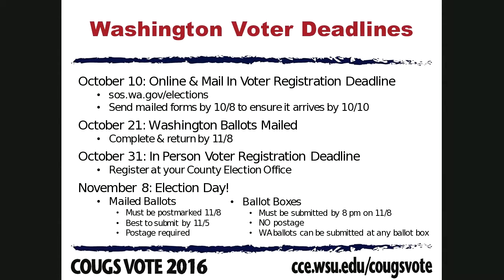Make sure you put postage on your ballot. Depending on where you live, you might have access to a ballot box — there's one on the WSU campus right outside the union building. You don't need to put postage on your ballot if you use a ballot box, and it needs to be submitted by 8 p.m. on election day. Any ballot can be submitted to any ballot box — even if you're in King County and using the Whitman County ballot box, that's totally OK.